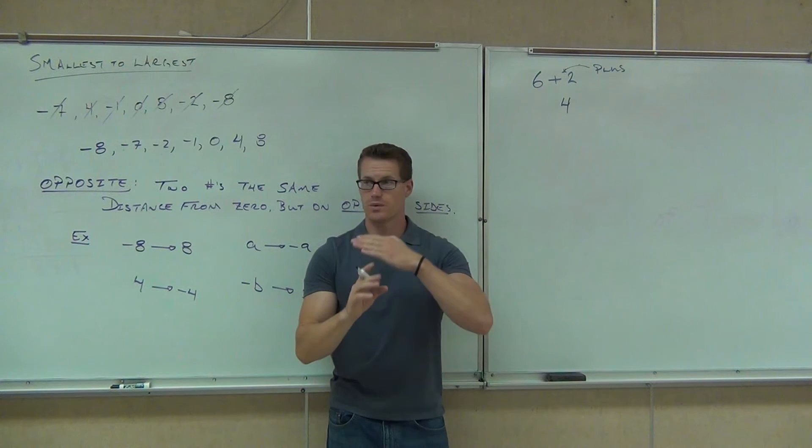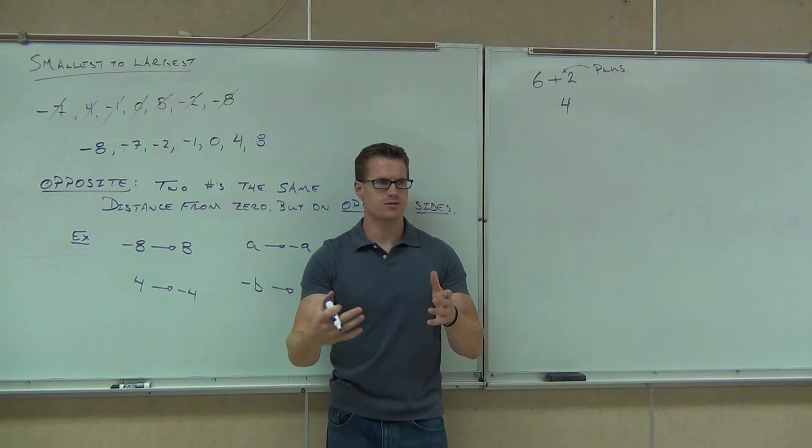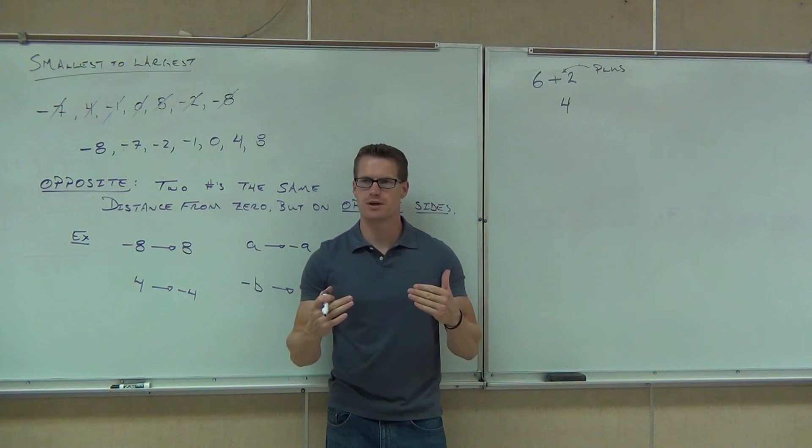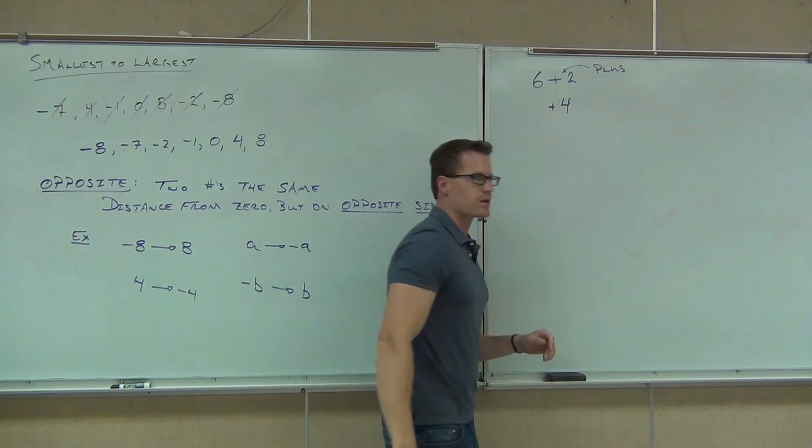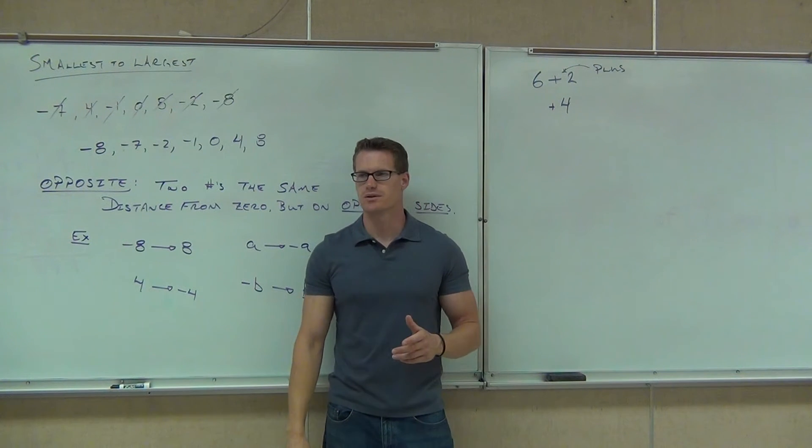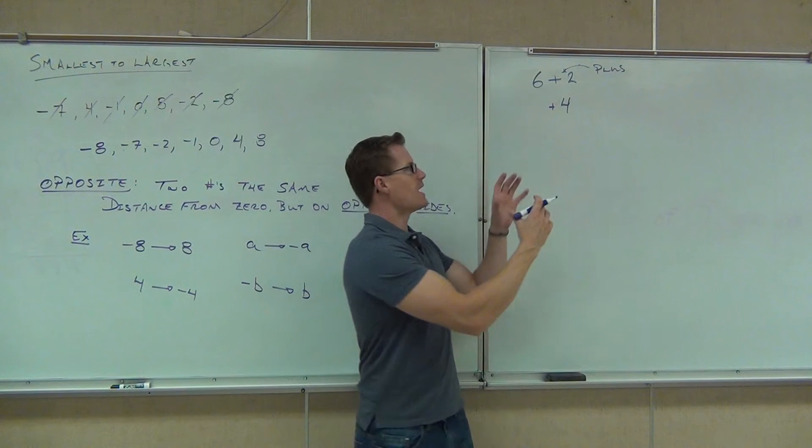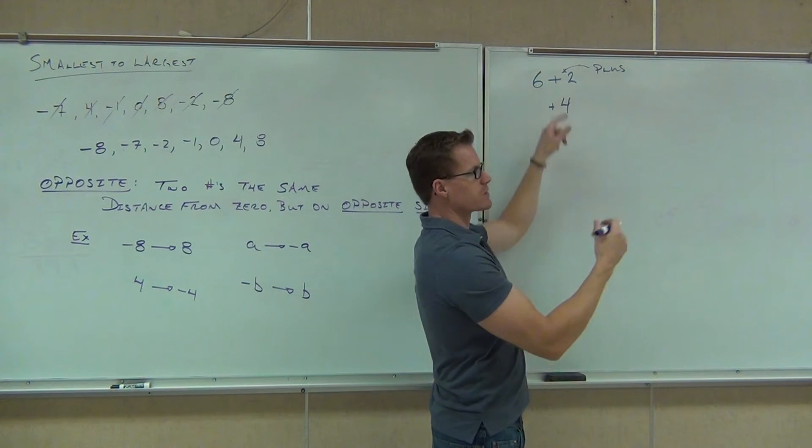If you have a number sitting out here all by itself, are you going to say that's plus four or positive four? Positive four. So while we don't write it, to distinguish between negative and positive, we say positive four or negative four. When we have no sign in front of a number, we're going to say positive. If we have a number with that plus sign, that's when we use the word plus.